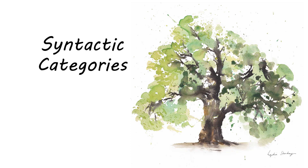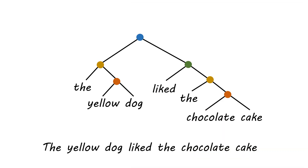Welcome to this tutorial about syntactic categories. In the last tutorial, we talked about how to identify constituents and use those constituents to analyze the internal structure of a sentence. In this lesson, we are going to talk about how to take that analysis and extend it to other sentences so that you can create rules for how to create new sentences. I showed you how to create a structure that analyzes the internal structure of the sentence: the yellow dog liked the chocolate cake.